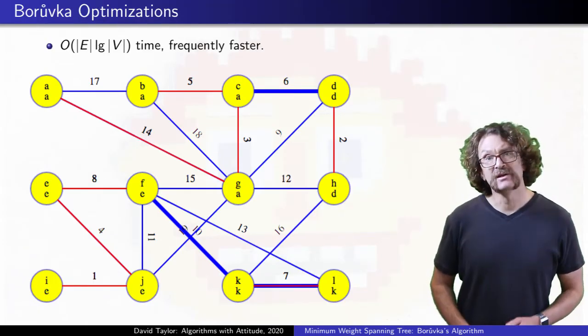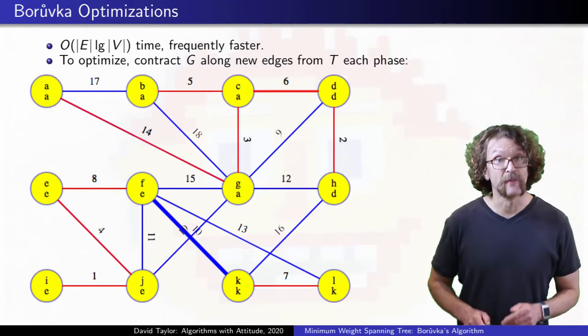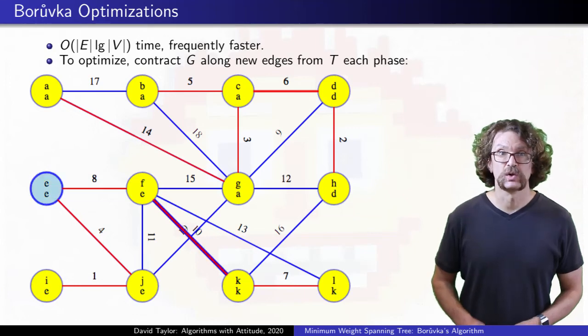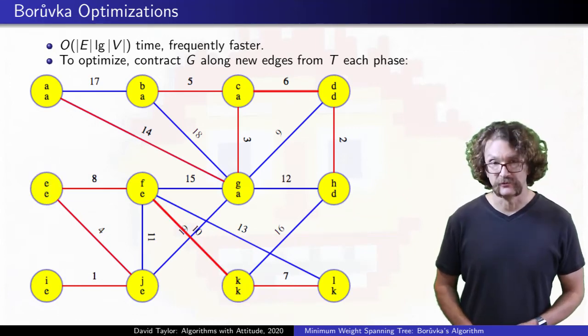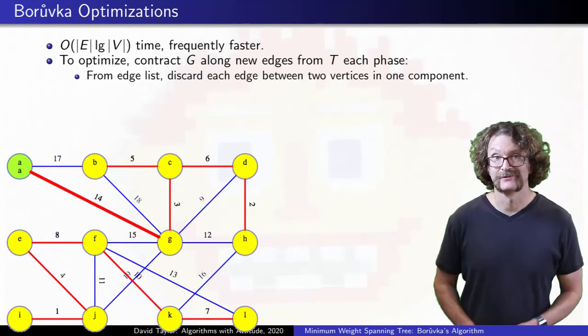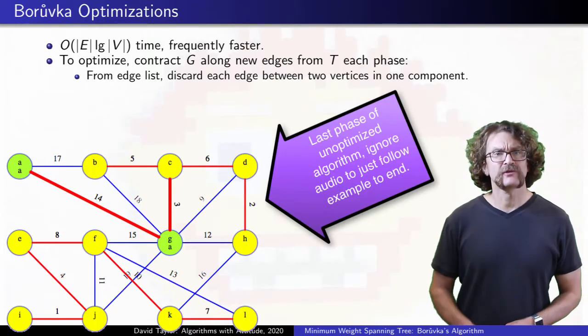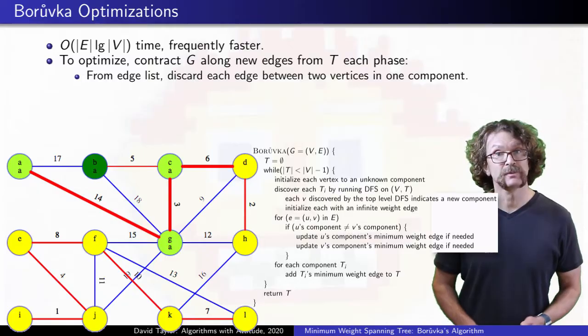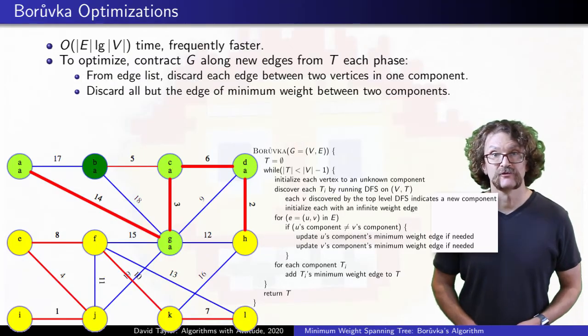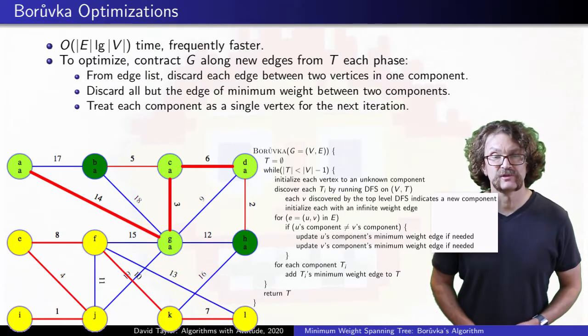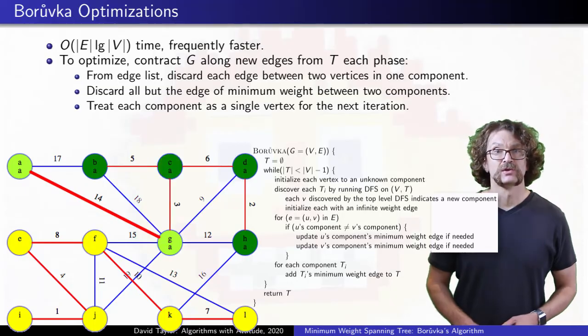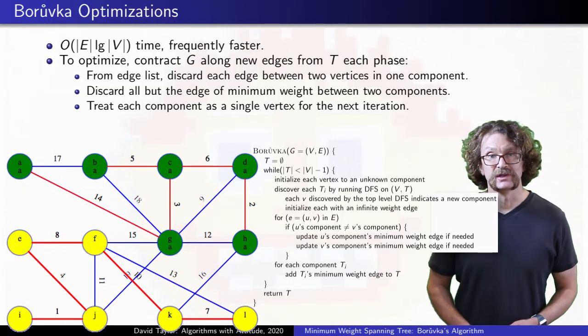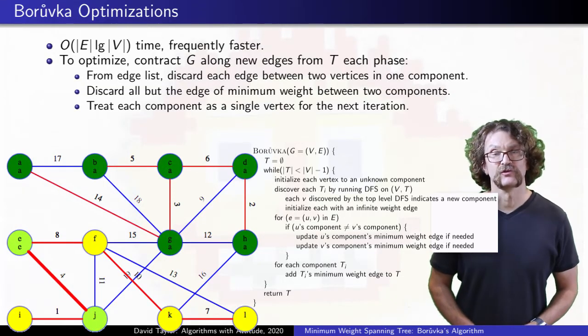If you are willing to add a bit of complexity to the code, there are some optimizations you can make by shrinking your graph between phases. Toss any edge that doesn't leave a component, and if you have multiple edges between two different trees in your forest, throw them all away except the cheapest. Then, you can shrink each forest tree down to a single vertex for your next phase.